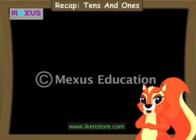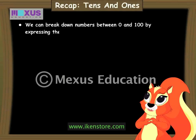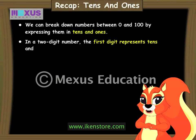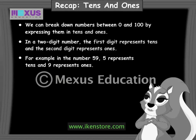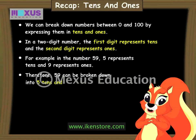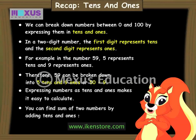I need to complete my stamp scrapbook, so let's quickly go over what we learnt today. We can break down numbers between 0 and 100 by expressing them in tens and ones. In a 2-digit number, the first digit represents tens and the second digit represents ones. For example, in the number 59, 5 represents tens and 9 represents ones. Therefore, 59 can be broken down into 5 tens and 9 ones, or 50 plus 9. Expressing numbers as tens and ones makes it easy to calculate — you can find the sum of two numbers by adding tens and ones separately.